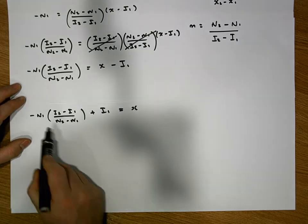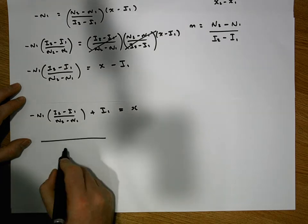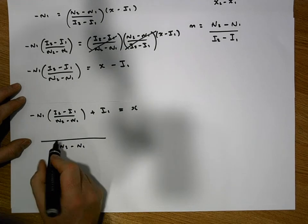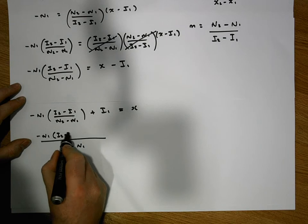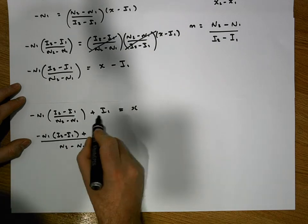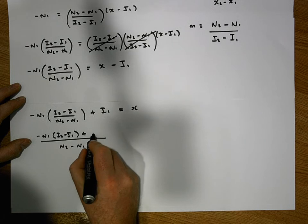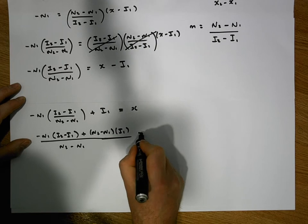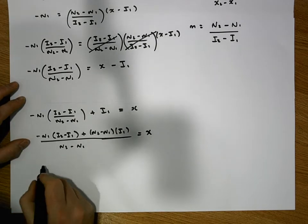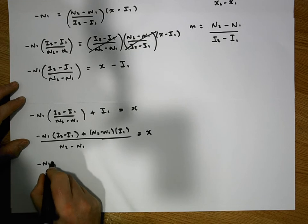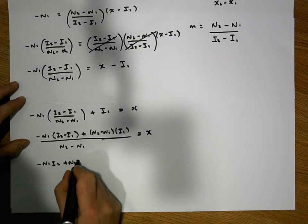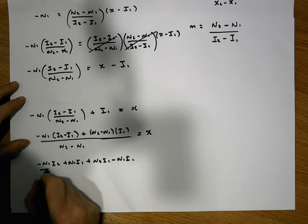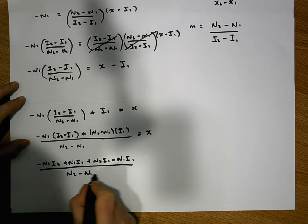Bringing i1 over to the left-hand side and getting a common denominator of (n2 − n1), we expand the brackets: −n1(i2 − i1) + (n2 − n1)·i1, all over (n2 − n1), equals x. Multiplying out the brackets gives: −n1·i2 + n1·i1 + n2·i1 − n1·i1, all over (n2 − n1), equals x.